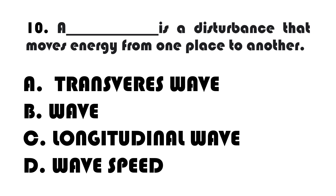Number 10. Blank — it is a disturbance that moves energy from one place to another. A. Transverse Wave. B. Wave. C. Longitudinal Wave. D. To be continued.